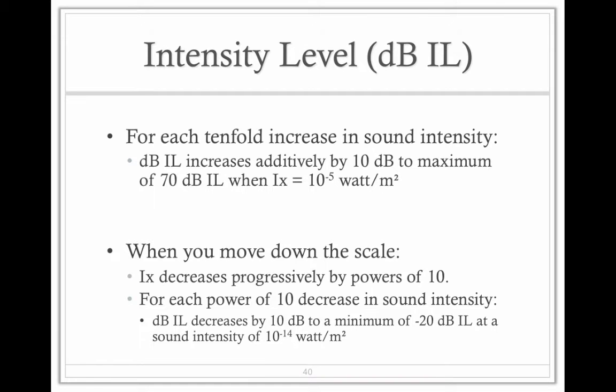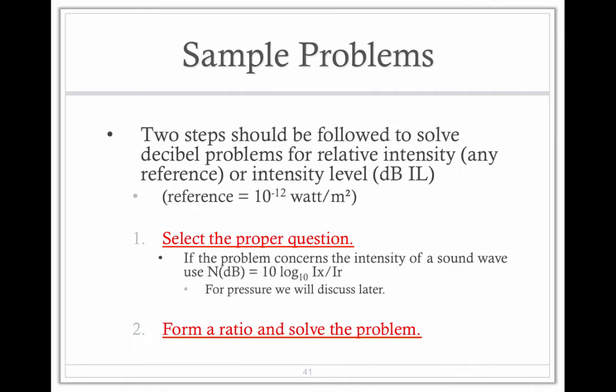Okay, so each tenfold increase in sound's intensity, dB IL increases additively by 10. Or if the absolute decreases progressively by powers of 10, for each power of 10 decrease in intensity, the dB IL decreases by 10 dB in these examples we've spoken about.